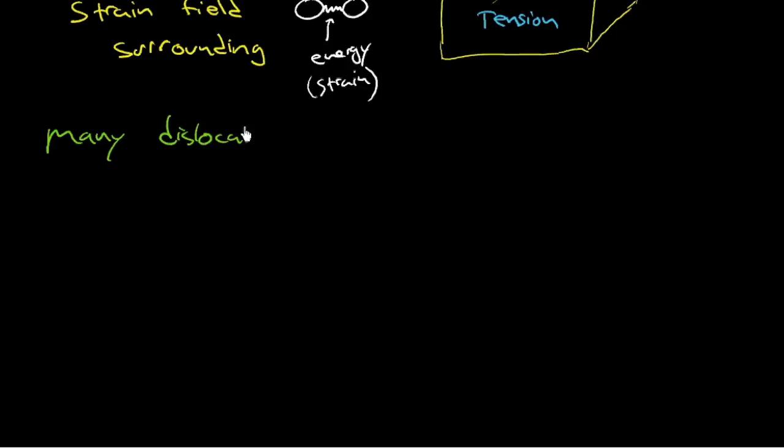Well, then it becomes many dislocations. Well, then what happens is the strain fields interact. Strain fields interact. And they repel one another. Or they get in each other's way. But they bump into each other, essentially. They repel one another.